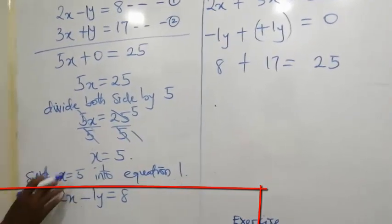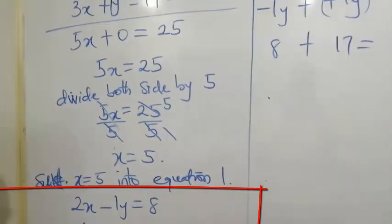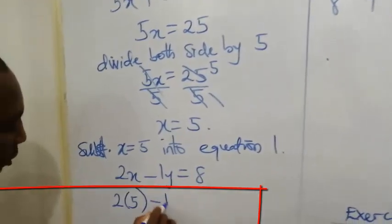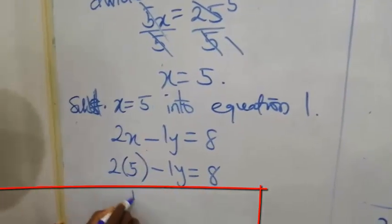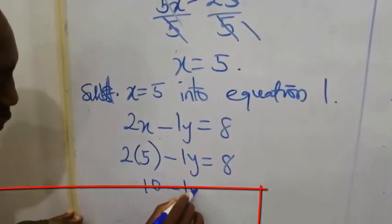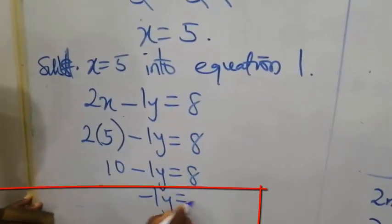So, everywhere you see x, you are replacing it with 5. So, that will be 2 into 5 minus 1y equals to 8. 2 multiplied by 5, that is 10, minus 1y equals to 8.